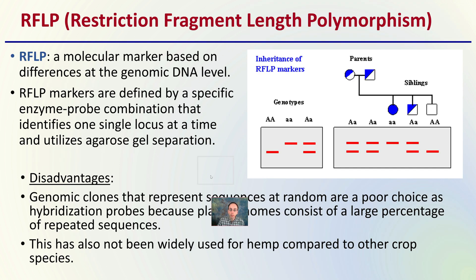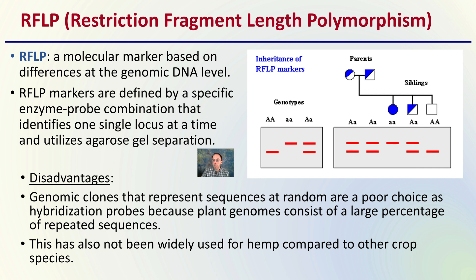RFLPs stands for restriction fragment length polymorphism. This is a molecular marker based on differences at the genomic DNA level. These RFLP markers are defined by a specific enzyme-probe combination that identifies one single locus at a time and utilizes agarose gel separation. The disadvantage is that genomic clones representing sequences at random are poor choices as hybridization probes because plant genomes consist of a large percent of repeated sequences, and this has not been widely used for hemp because of the high number of repeat units, making the technique less effective.